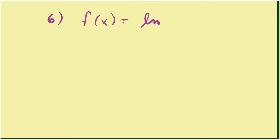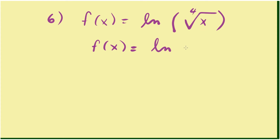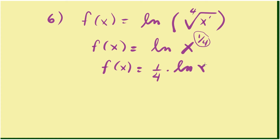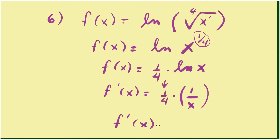Let's do another example: find the derivative of natural log of the fourth root of x. We rewrite the radical form to rational exponent form — that's x raised to 1 fourth. Then, using the property of the logarithm, we move the 1 fourth out front times natural log of x. Now we perform the differentiation: 1 fourth is a constant, so we bring it down and get the derivative of natural log of x, which is 1 over x. So the derivative is 1 over 4x.